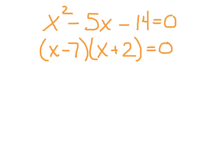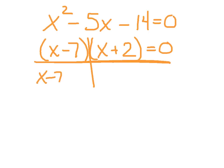After setting it equal to 0, I've got x squared minus 5x minus 14. I'm adding to this number, multiplying to this number — so negative 7 and positive 2. Setting each factor equal to 0, I should get x equals 7 and x equals negative 2.